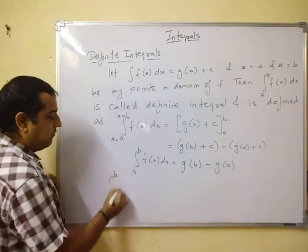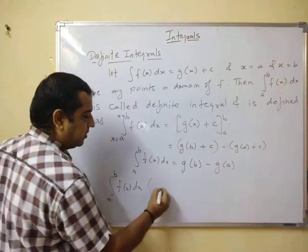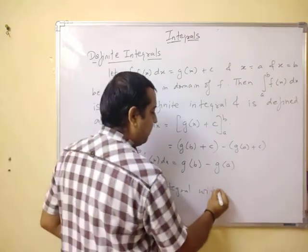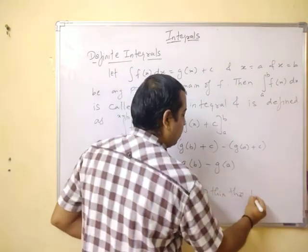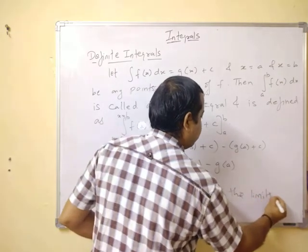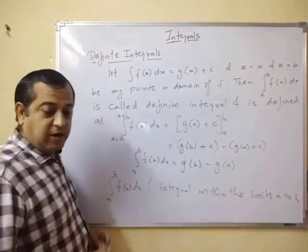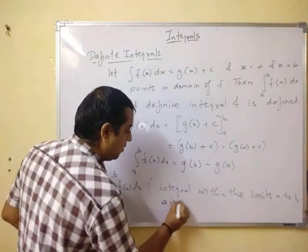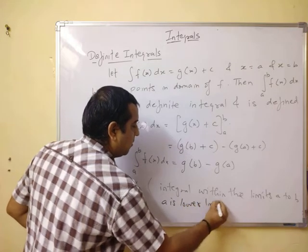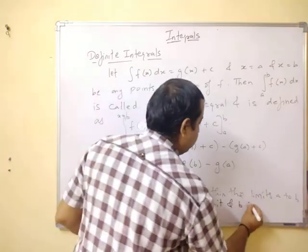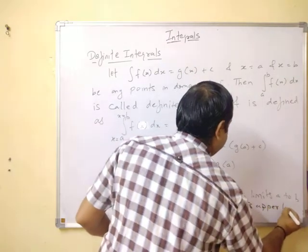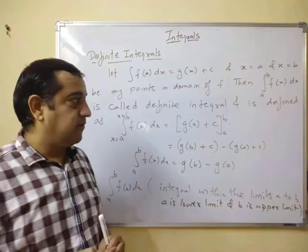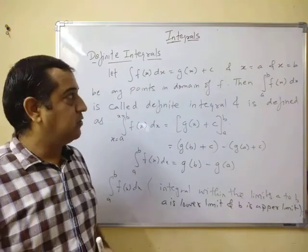Read this as: integral from a to b of f(x)dx, or integral within limits a to b, where a is the lower limit and b is the upper limit. Both a and b are values of x.